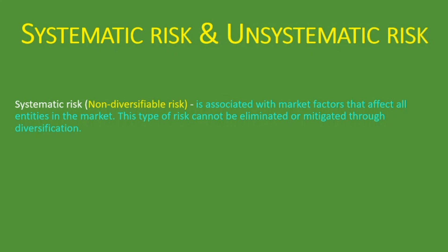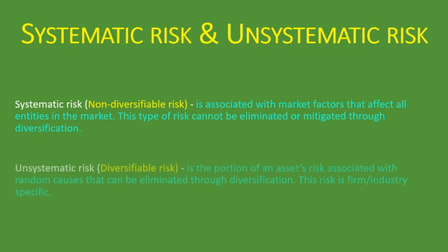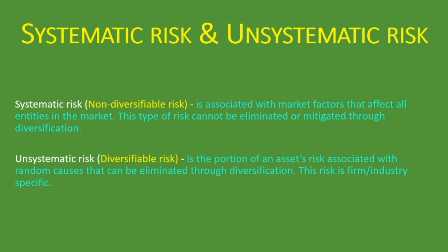What is unsystematic risk? Unsystematic risk, also known as diversifiable risk, is the portion of an asset's risk associated with random causes that can be eliminated through diversification. This risk is firm or industry specific. To determine whether a risk is systematic or unsystematic, you look at who is affected — a specific industry, a specific firm, or the entire market.